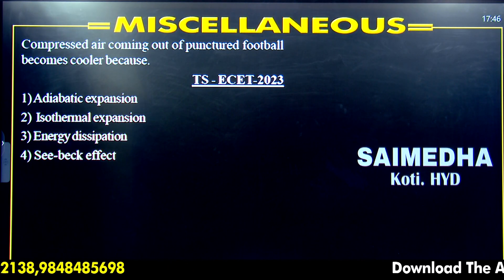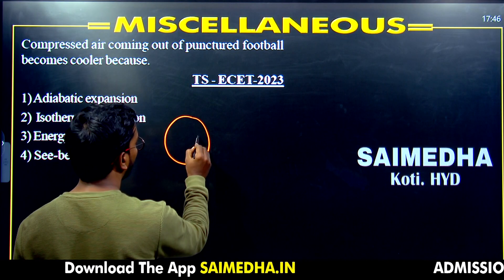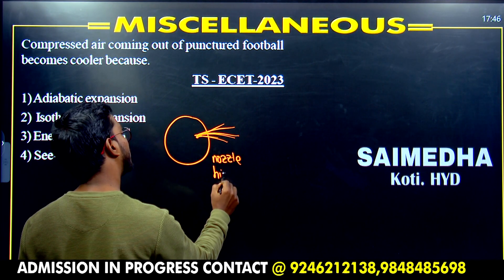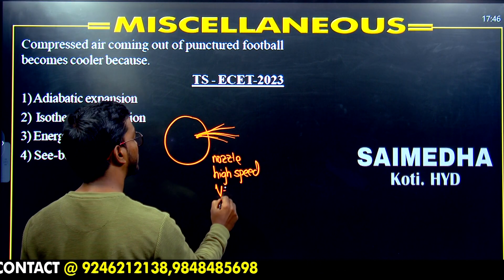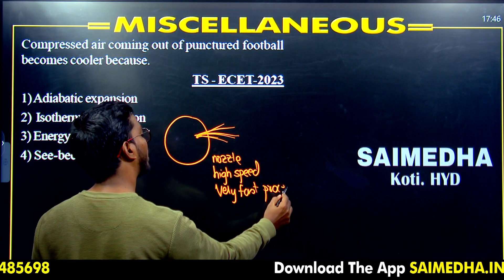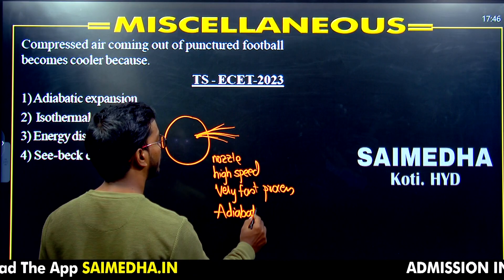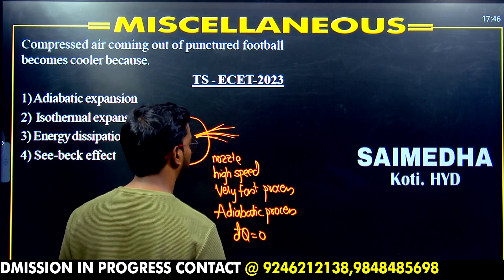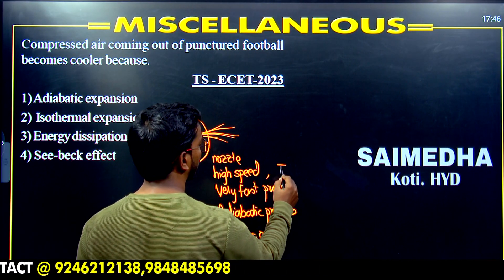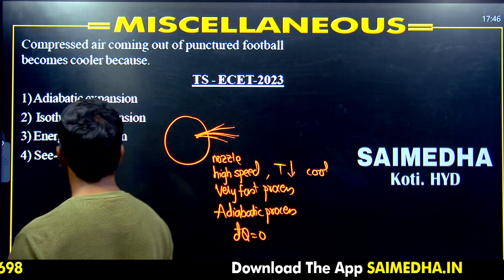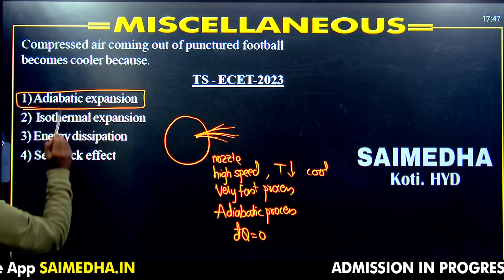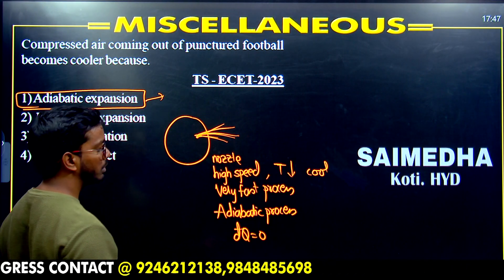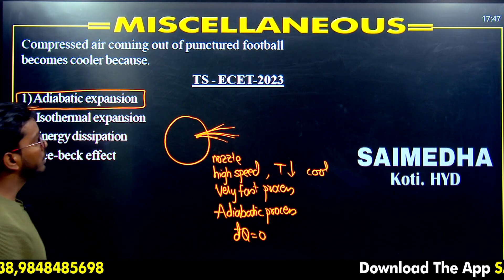Compressed air coming out from a punctured football: this is a very fast process, called an adiabatic process, because there is not enough time for heat transfer — heat transfer equals zero. As the air moves very fast, temperature decreases and it becomes cool. This cooling happens during adiabatic expansion. It is similar to the Joule-Thomson experiment where heat transfer equals zero; here throttling is not in the options, so the correct answer is adiabatic expansion.